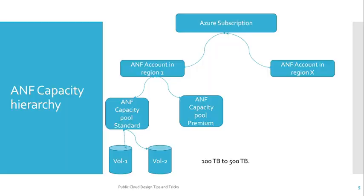Now let's understand the ANF capacity hierarchy. Inside a subscription you can deploy ANF accounts in various regions. Under an ANF account you can create an ANF capacity pool, and when you create the capacity pool that is where you define the cost type — whether you are creating standard, premium, or other types. Under a capacity pool you can define different volumes and their sizes. Volumes are the most granular level, which get mounted to various virtual machines or wherever you want to realize the file share system.